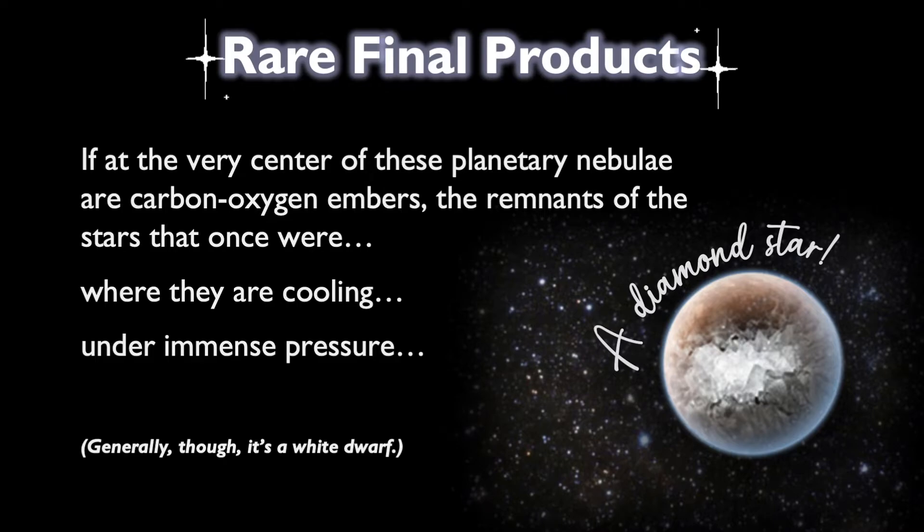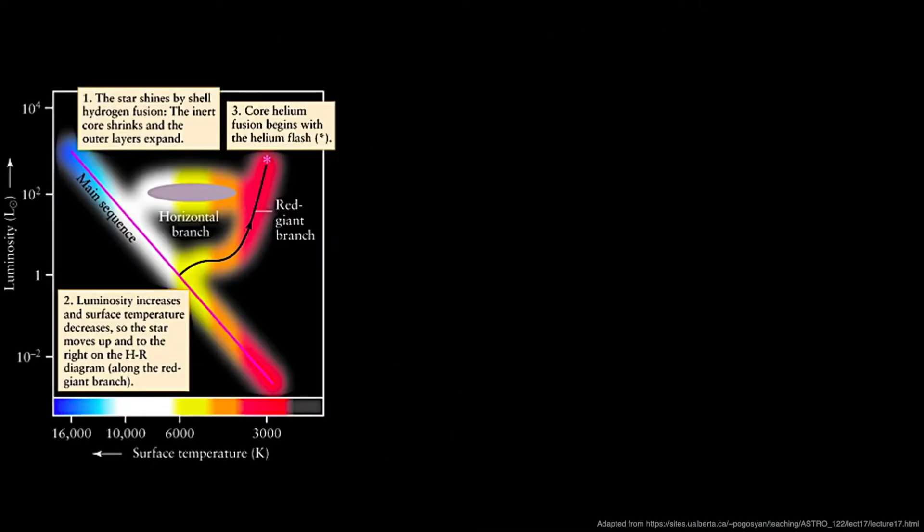So, if we were to track the changes in the physical characteristics of a star like the Sun as it evolves, we'll see the star transition to shell hydrogen fusion after its inert core shrinks, when core fusion pauses and the outer layers begin to expand. As they expand, luminosity increases and surface temperature decreases, so the star moves up and to the right on the HR diagram along the red giant branch.